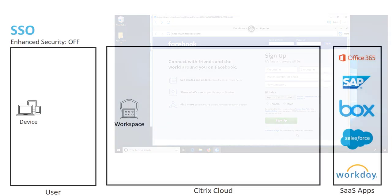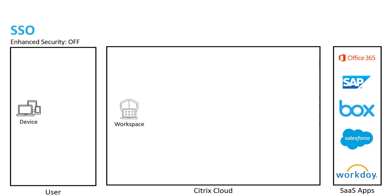Now that we understand the benefit from a user perspective, let's take a conceptual look at the architecture and see how everything fits together. Let's first start with being able to provide single sign-on to a SaaS application, but with the enhanced security capability turned off. The user is going to use Workspace app installed locally on the endpoint device and authenticate, which gets sent up to Workspace and validated against our primary identity provider.